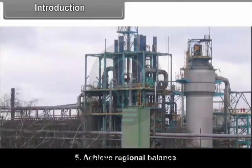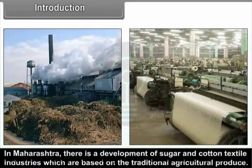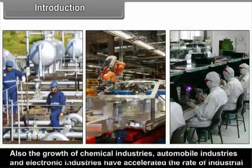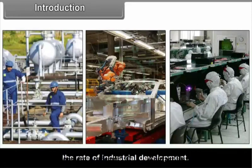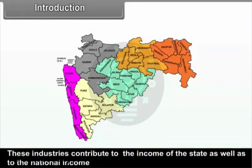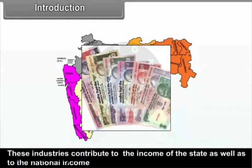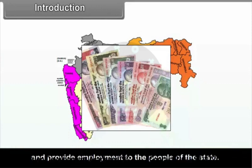To achieve regional balance, in Maharashtra there is a development of sugar and cotton textile industries which are based on the traditional agricultural produce. Also, the growth of chemical industries, automobile industries and electronic industries have accelerated the rate of industrial development. These industries contribute to the income of the state as well as to the national income and provide employment to the people of the state.